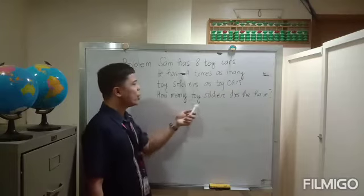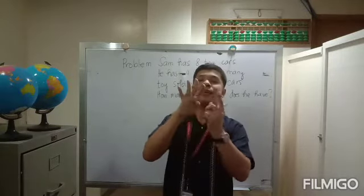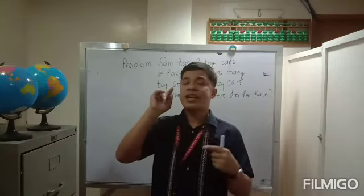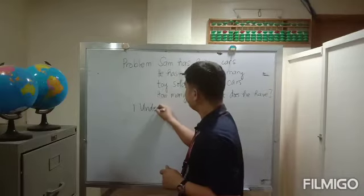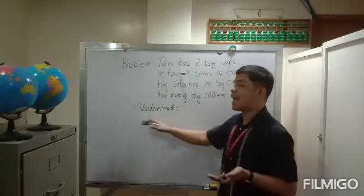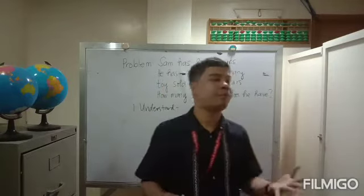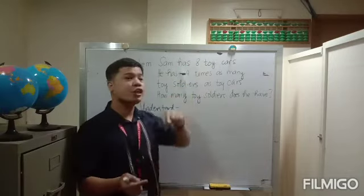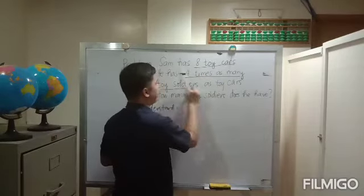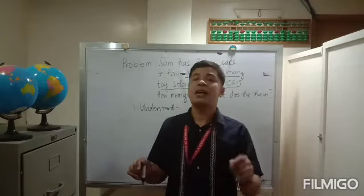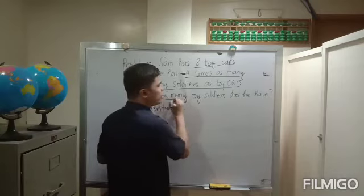The question is: how many toy soldiers does he have? In solving word problems, there are four steps to follow: understand, plan, do or answer, and check. Let's start with step one — understand. There are two sub-questions: first, what are the given? The givens are eight toy cars, and four times as many toy soldiers as toy cars. Second, what is asked? The question asks how many toy soldiers does he have.